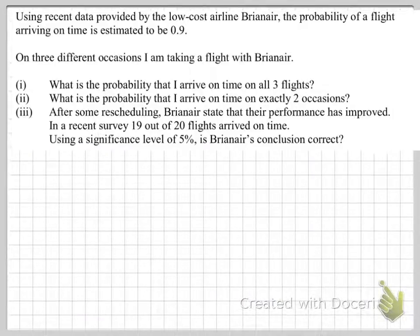Right, let's look at this example here. So, using recent data provided by the low-cost airline Ryanair, the probability of a flight arriving on time is estimated to be 0.9. And on three different occasions, I'm taking a flight with Ryanair. What's the probability I'll arrive on time on all three flights? And then we'll look at the probability of arriving on exactly two occasions. And then the final one involves some hypothesis testing. So, let's look at the first one. Firstly, let's set up this situation by defining x. And let's let x be the number of times the flight is on time.